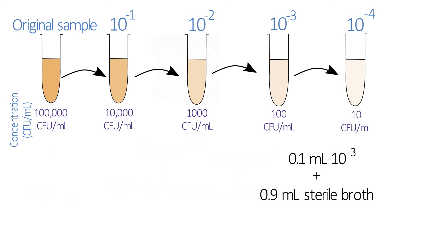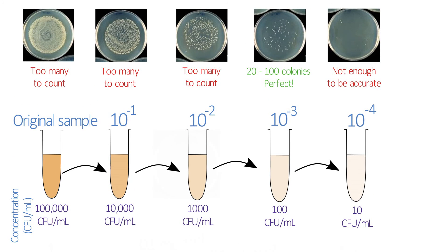In the second practical, you'll then count the colonies that grow on each plate. Remember, you're going to need to have between 20 and 100 colonies on at least one of the plates to get an accurate indication of the number of colony-forming units.